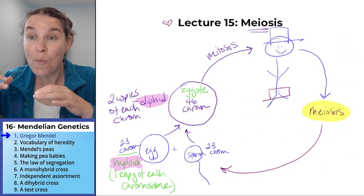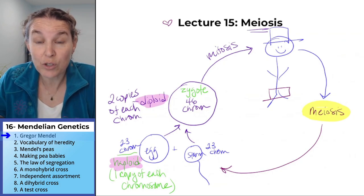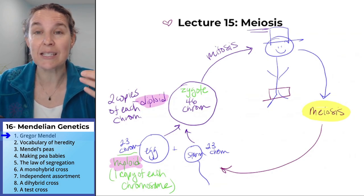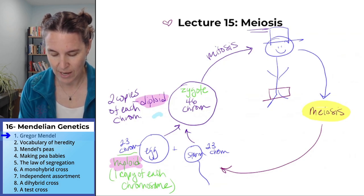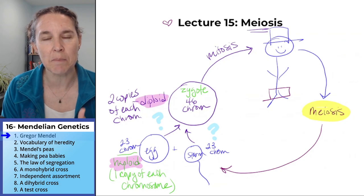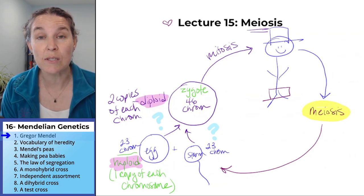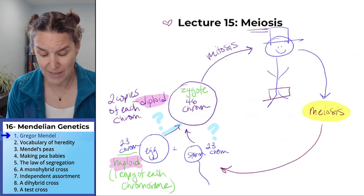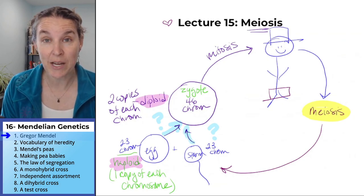We've done almost every part of the human life cycle. We've looked at the process of meiosis, we've looked at mitosis, and now we're going to focus in here at this place where sperm and eggs combine. We're going to look at the rules that determine what our zygote is going to look like. This is going to rely on our understanding of meiosis.